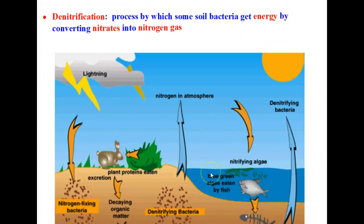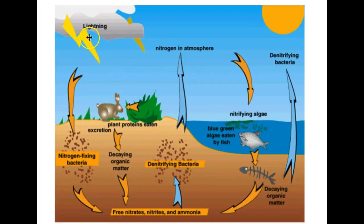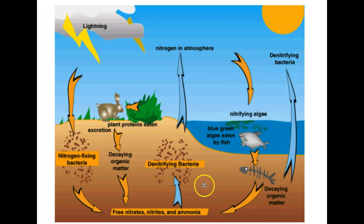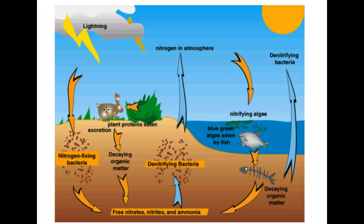Here is a diagram showing the nitrogen cycle. Lightning strikes form nitrogen compounds in the soil. Nitrifying algae and nitrogen-fixing bacteria and plants take nitrogen from the atmosphere and convert it into nitrogen compounds. Denitrifying bacteria return nitrogen gas back to the atmosphere. The nitrogen compounds in plants are then eaten by animals, and the cycle continues over and over, keeping nitrogen cycling in our biosphere.